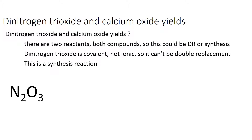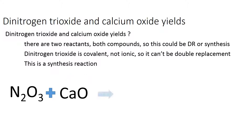We start with dinitrogen trioxide, which I hope everyone can write, and then we add calcium and oxygen. We need to check our crisscross to make sure that the charge is cancelled and we've written it correctly.